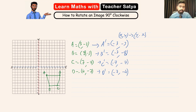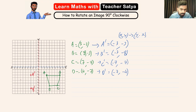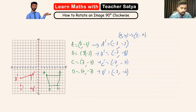Now let's go ahead and plot it. A prime is at (-3, -3). B prime is at (-3, -8). C prime is at (-7, -7), right here. D prime is at (-7, -4). This is what our image looks like once we do a 90 degree clockwise rotation.